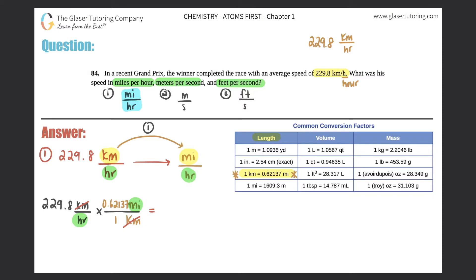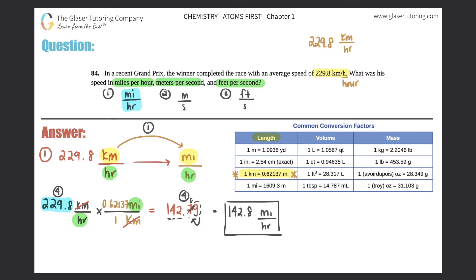So 229.8 times 0.62137 is 142.79. Now we just have to apply the correct sig figs. There are four sig figs in the given, so there must be four in the answer: 1, 4, 2, and 7. The 9 rounds up the 7 to 8, so the answer is 142.8 miles per hour. That is the first answer. You can write it as a fraction or with a slash — same thing.